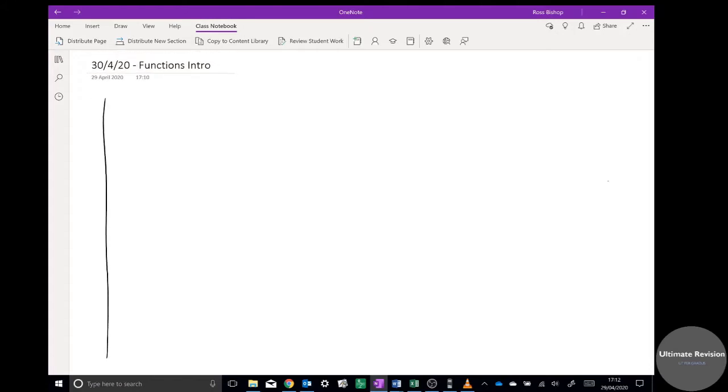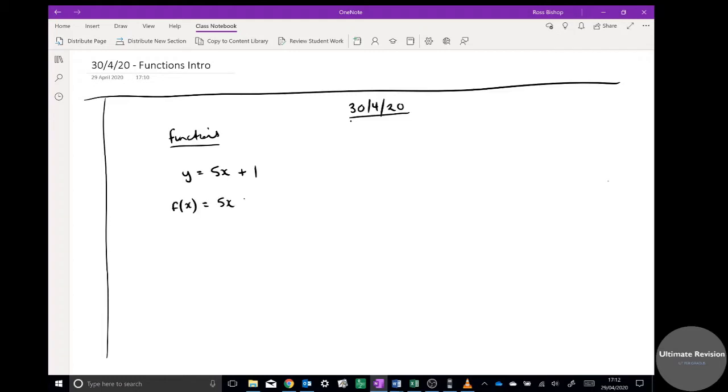Right, so functions and the date today is the 30th of April 2020. Now functions is just another way of writing an equation really. So let's imagine we have y equals 5x plus 1. Functions is just a different way of writing that. So all I mean by that is you write f(x) equals 5x plus 1. That would mean exactly the same thing, some function of x is equal to 5x plus 1. Or another way that we sometimes write functions is rarer but it does come up: f, x, and then arrow 5x plus 1. All of those mean the same thing.